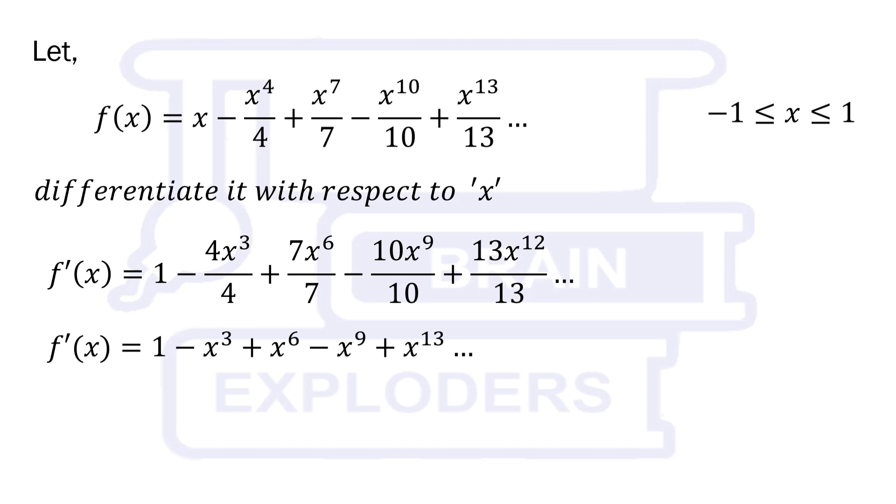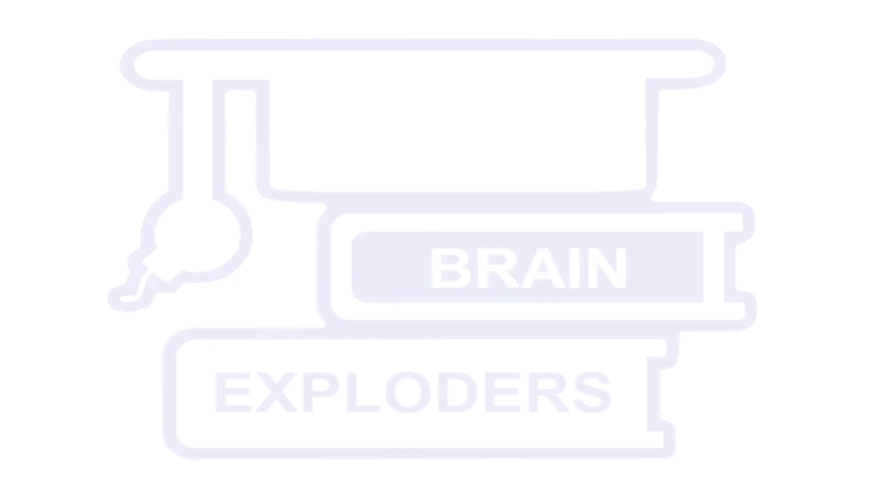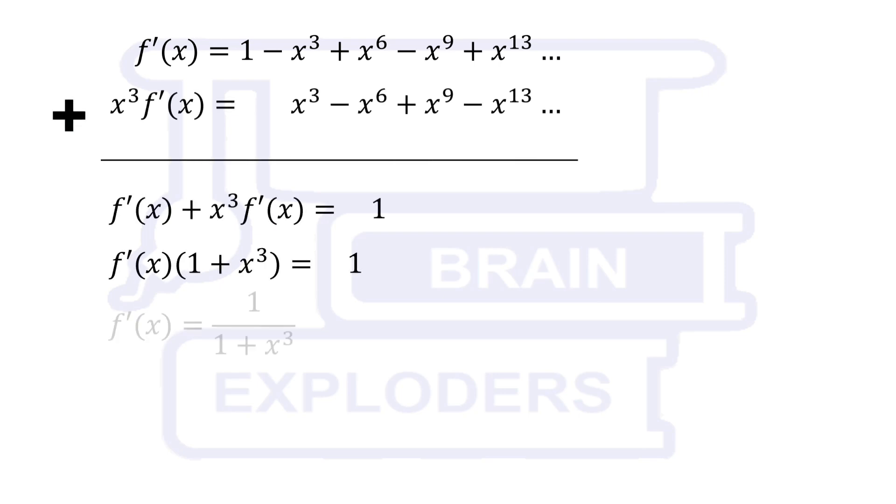This is a convergent geometric progression of infinite terms with a common ratio of negative x cubed. Its value is equal to first term over 1 minus common ratio, that is 1 over 1 plus x cubed.